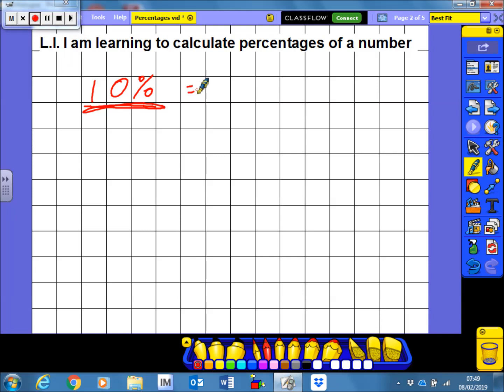But first of all, let's look at what 10% is as a fraction. So 10% is obviously 10 hundredths. Let's simplify that quickly. So 10 hundredths, these are both in the 10 times table. So this 10 can be divided by 10 and simplified to a 1, and this 100 can be simplified by dividing it by 10 and we get 10. So 10% is the same as a tenth.